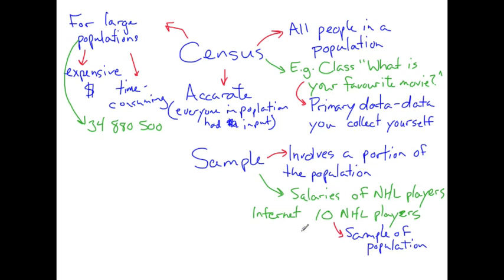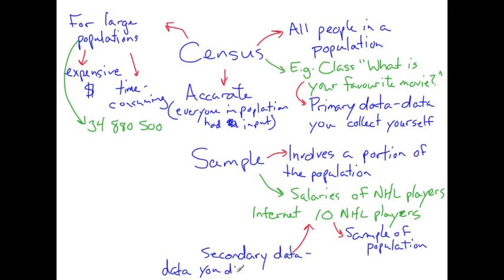However, we used the internet to collect this data, so this data is going to be called secondary data. Secondary data is data you did not collect yourself. We did go on the internet, but we did not directly interview or survey these 10 NHL players to find out their salaries — somebody else collected that data, so it is secondary data.